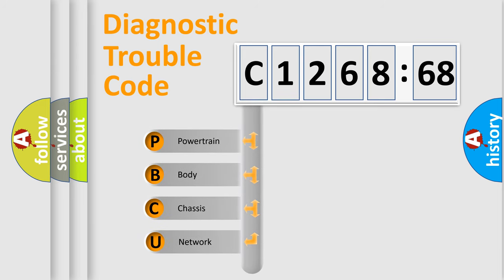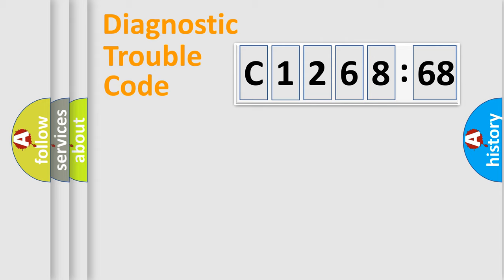First, let's look at the history of diagnostic fault code composition according to the OBD2 protocol, which is unified for all automakers since 2000. We divide the electric system of automobile into four basic units.